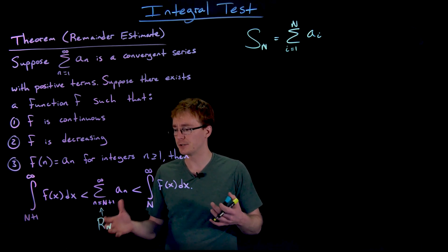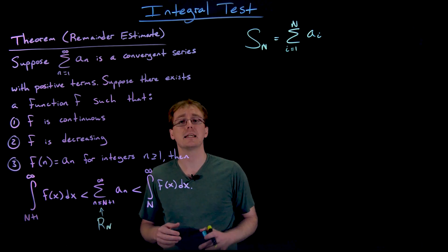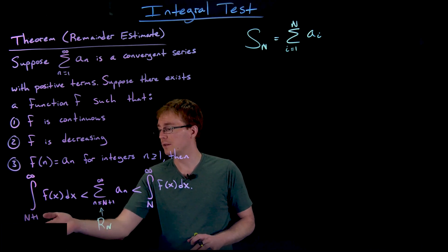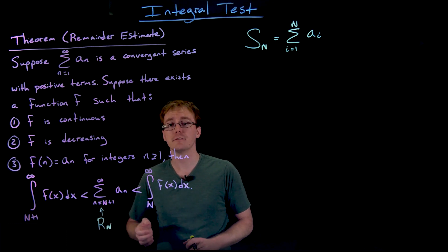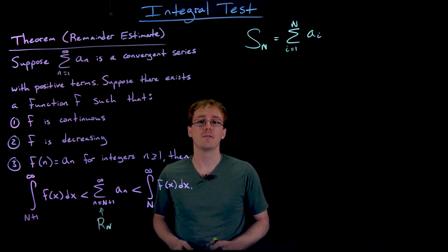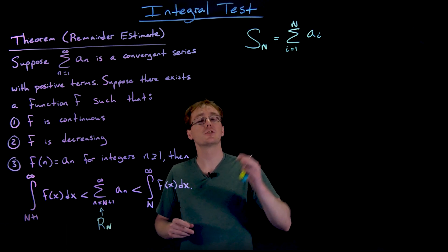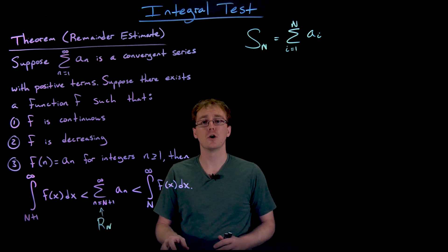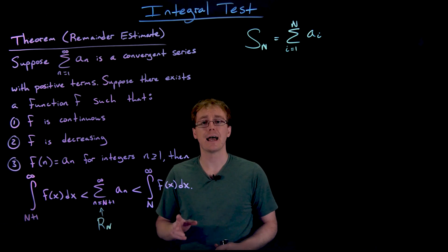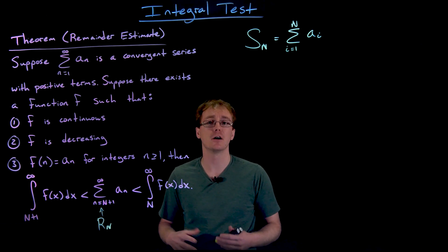What the integral test can be used to show is that the remainder of our series — the error in our approximation using the nth partial sum — can be bounded by two integrals. We bound it below with the integral from n+1 to infinity of f(x), and we bound it above by the integral from n to infinity of f(x) dx. This remainder estimate is useful because it tells us how accurate our approximation is, and it can also be used to determine how many terms we need in a partial sum to achieve a desired accuracy.